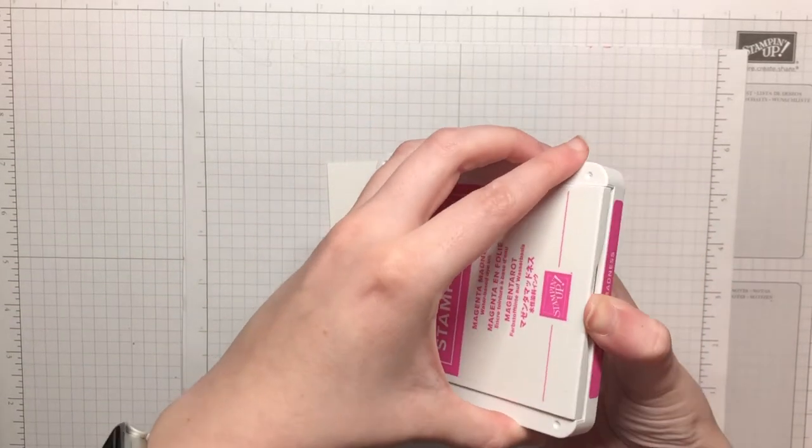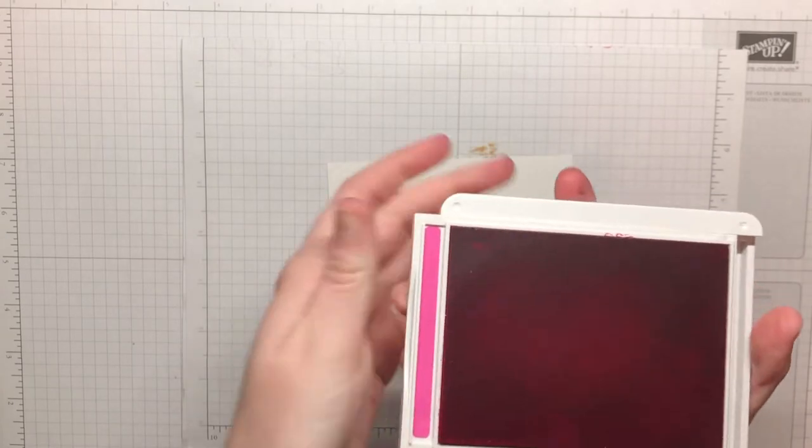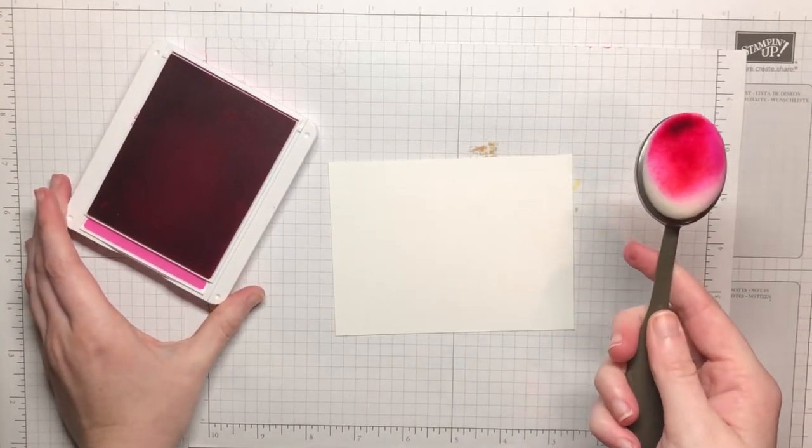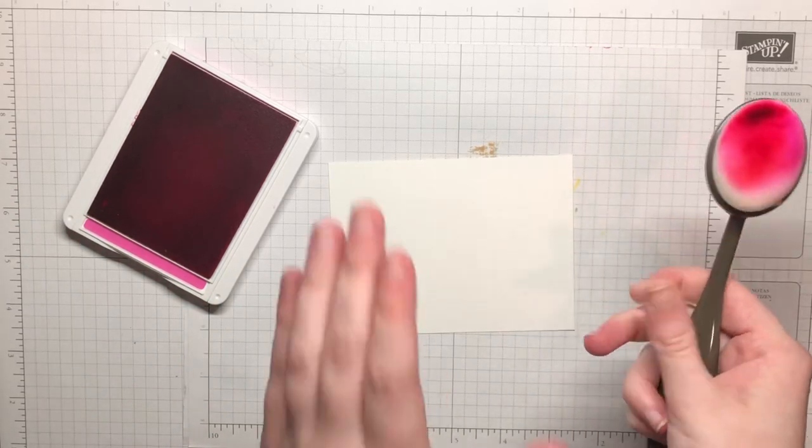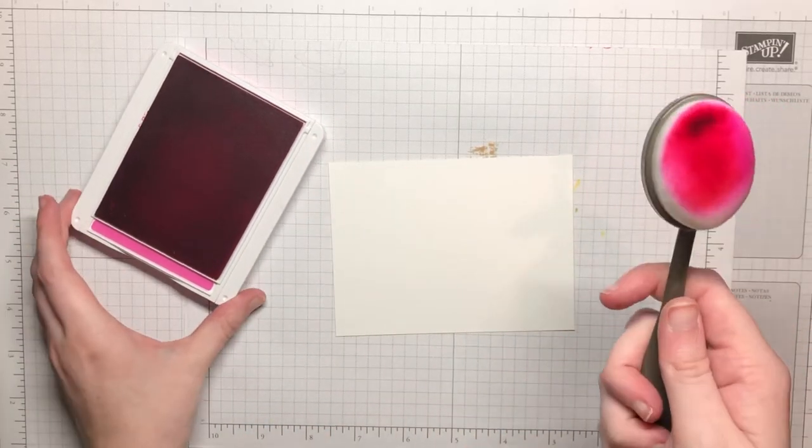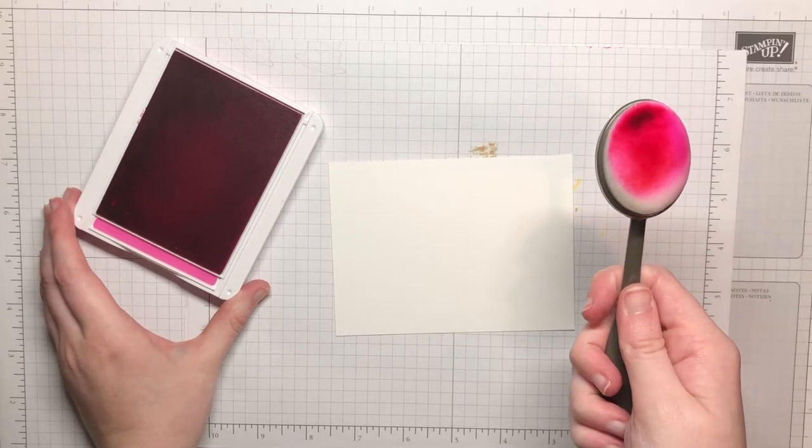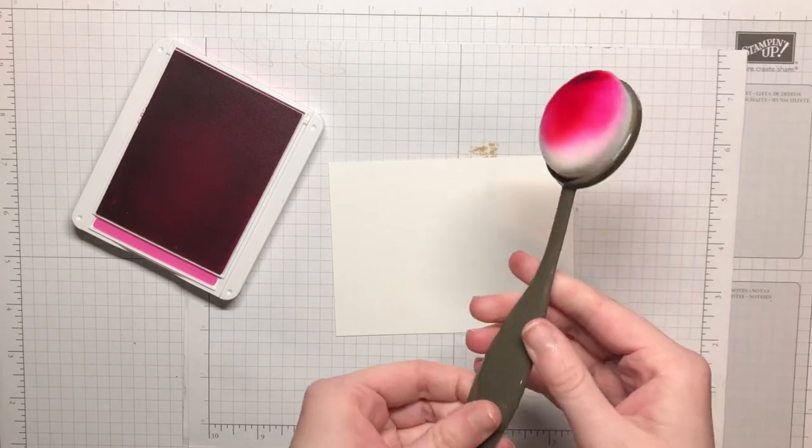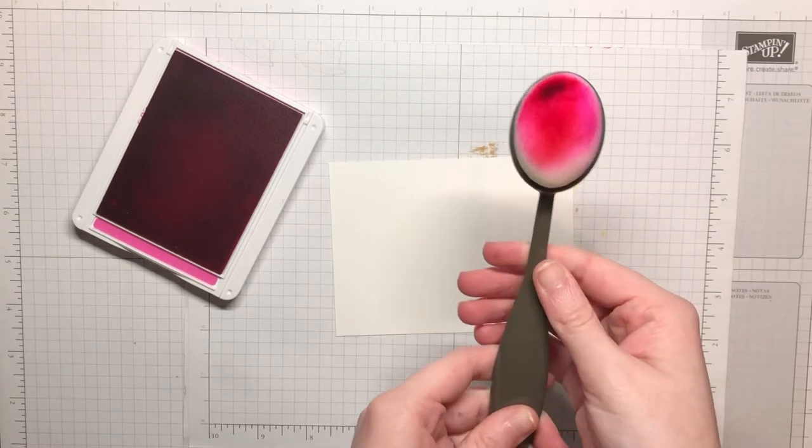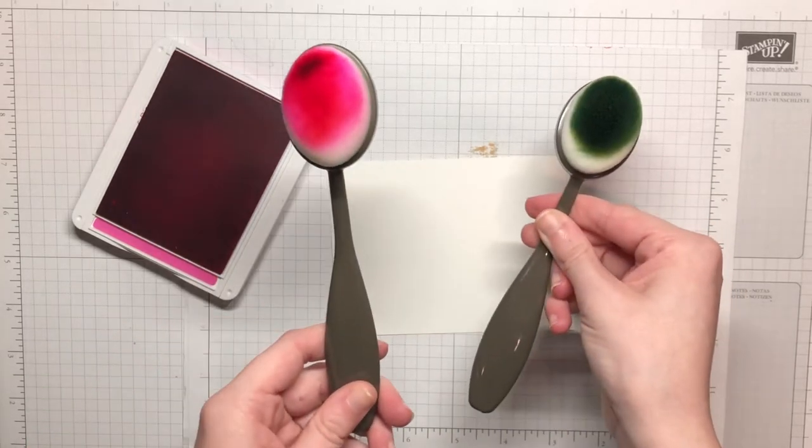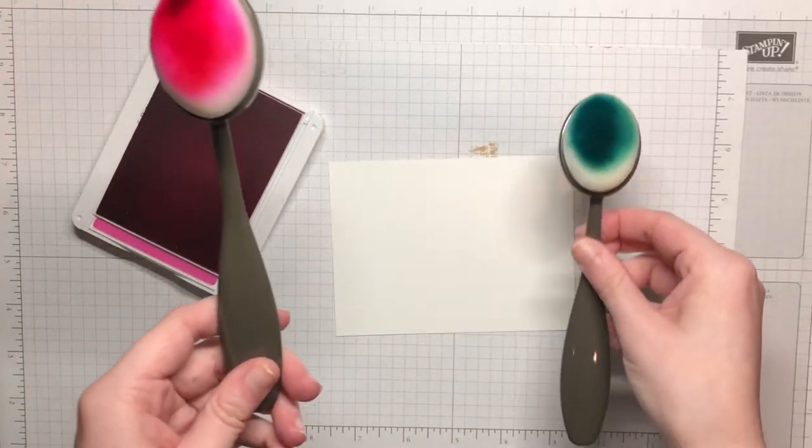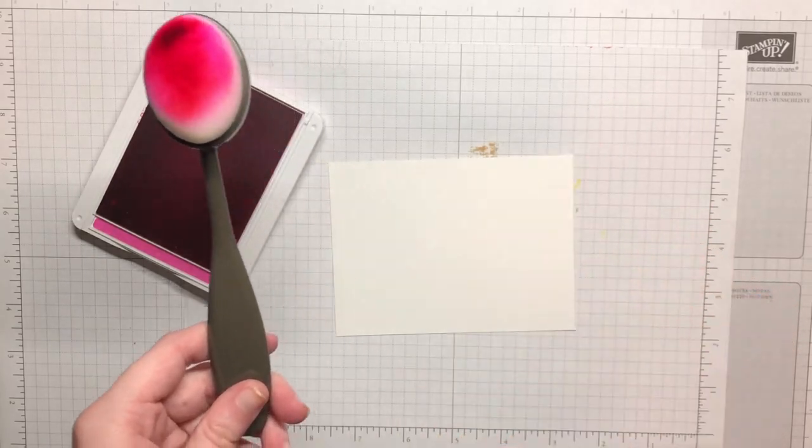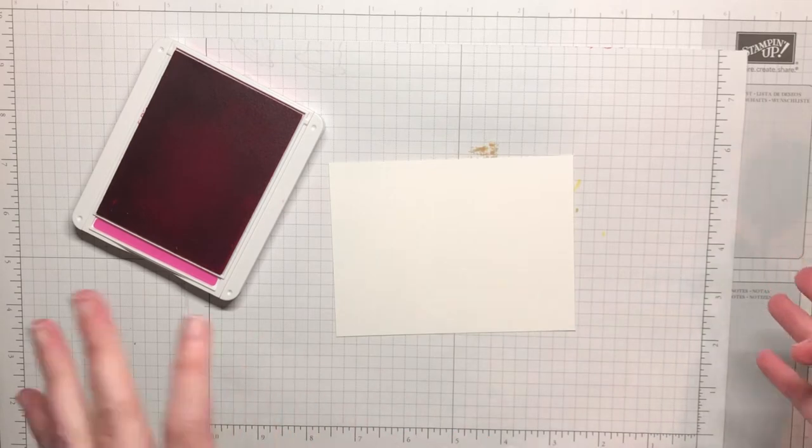I've got the Magenta Madness first and I'm gonna go ahead and open that up. And then I'm bringing in my blending brushes. These are newer to Stampin' Up and they were out of stock for a while but they are back in stock now. You get three in a pack and I have one for each color family. This is for my pinks, and then I also have one for my greens.